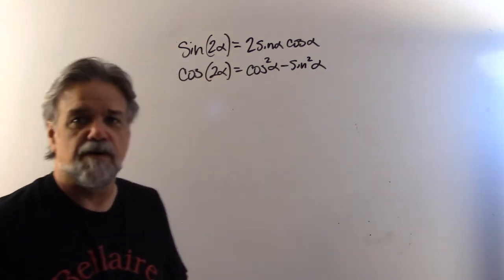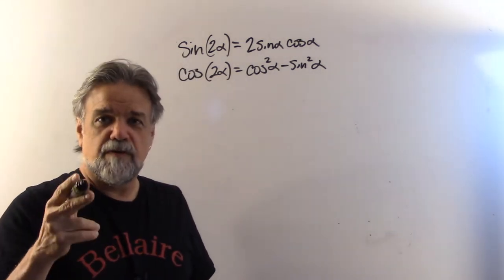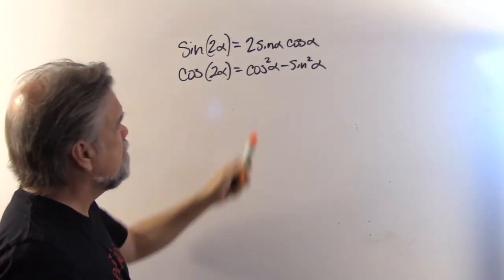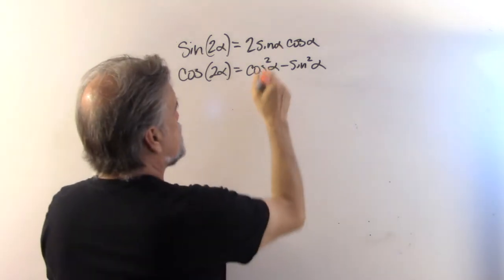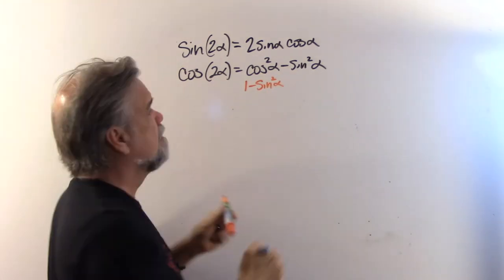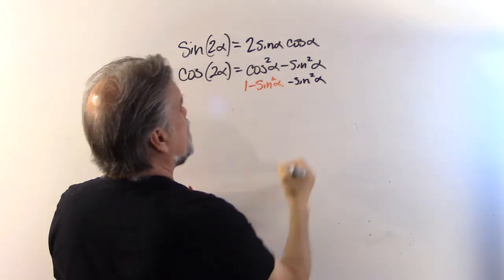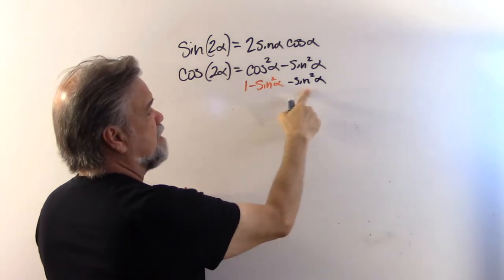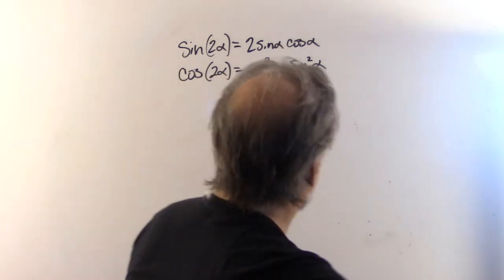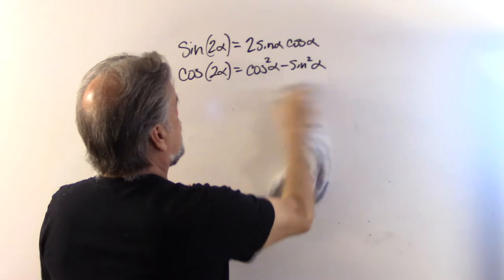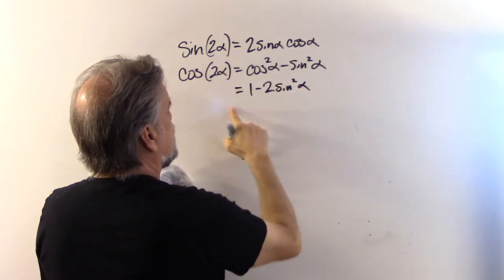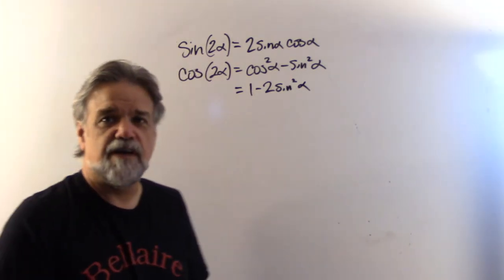However, remember the Pythagorean identity: sine squared plus cosine squared equals 1. That means cosine squared α equals 1 minus sine squared α. Substituting in: (1 minus sine squared α) minus sine squared α equals 1 minus 2 sine squared α. So we have a second identity for the cosine of 2α: it equals 1 minus 2 sine squared α.